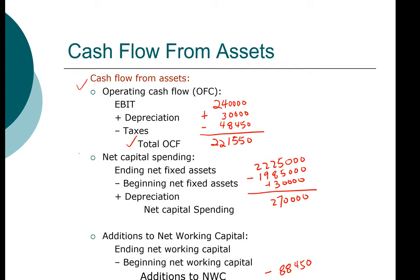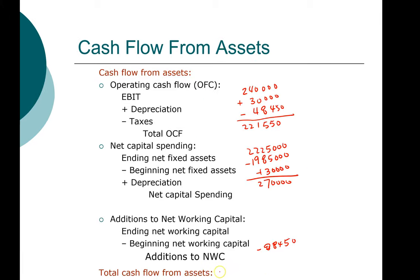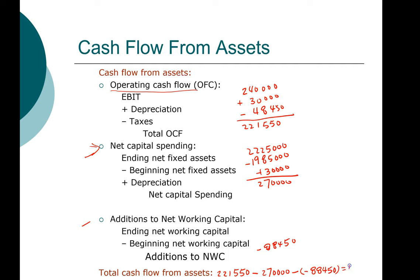Now, using the cash flow from assets formula: operating cash flow minus net capital spending minus additions to net working capital. We take $221,550 from operating cash flow, subtract $270,000 in net capital spending, and subtract negative $88,450. So total cash flow from assets is $40,000.